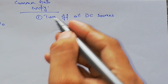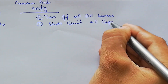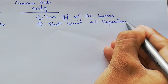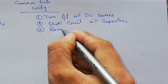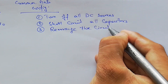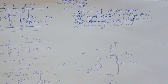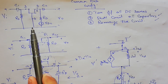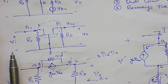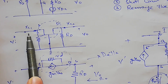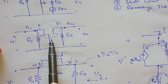We have to turn off all DC sources, short circuit all capacitors, and then rearrange the circuit. So this is our common gate configuration. Applying the first step, the capacitors are short circuits while the remaining circuit is intact.